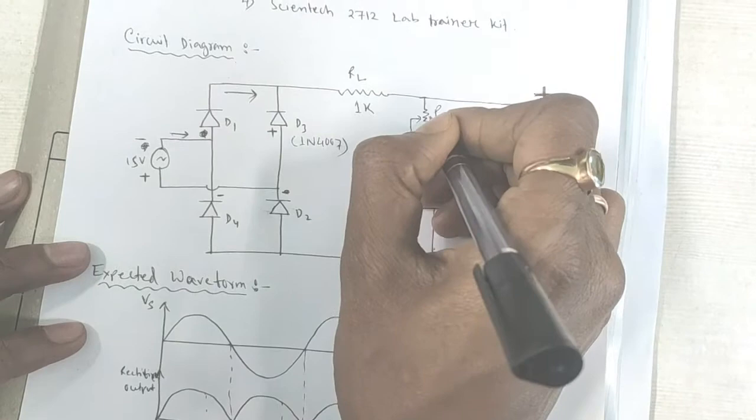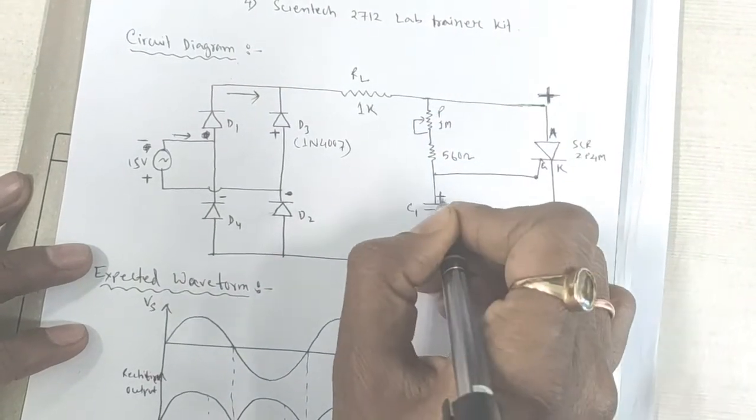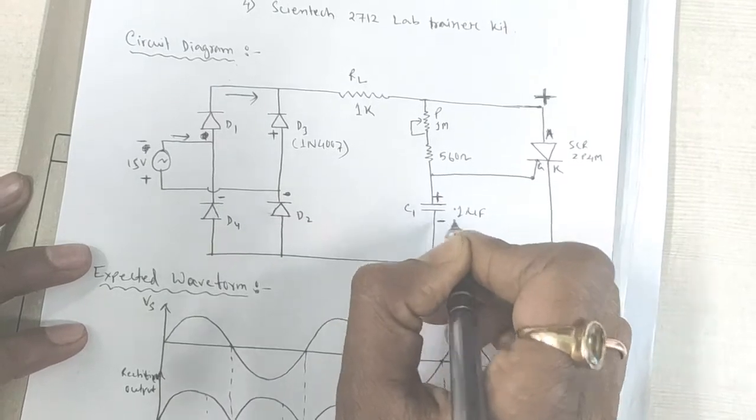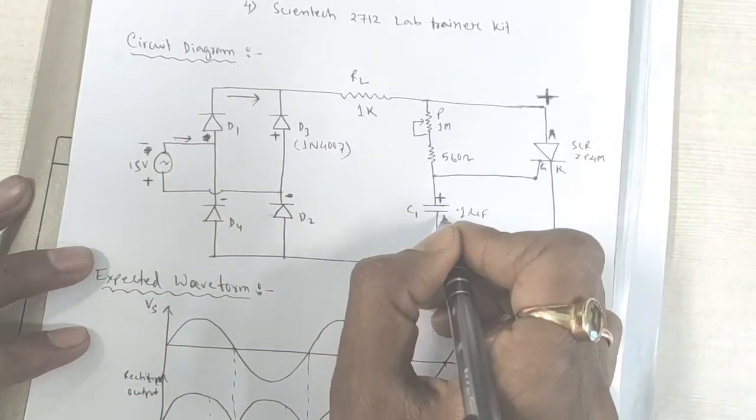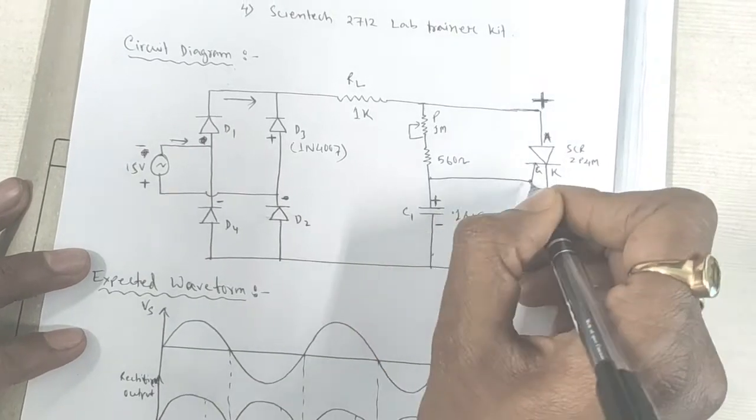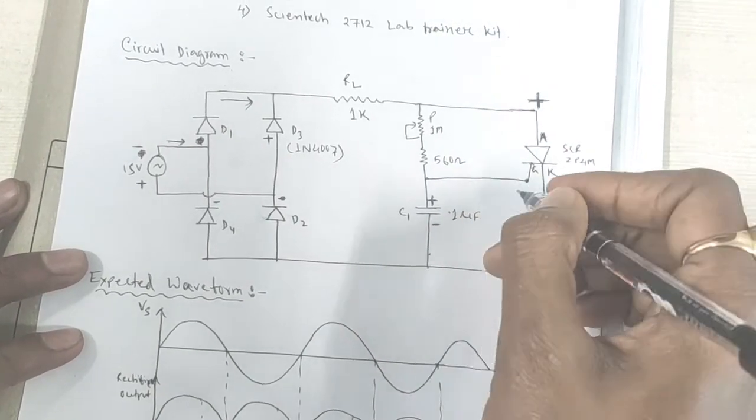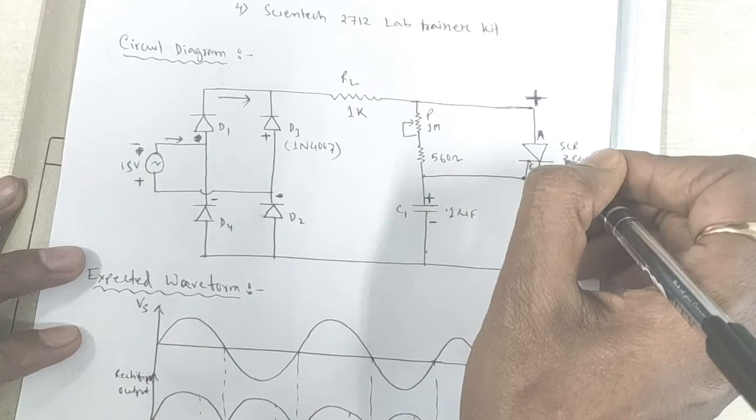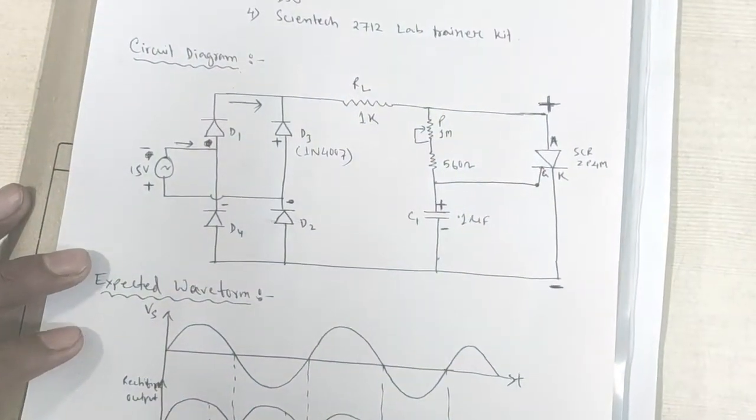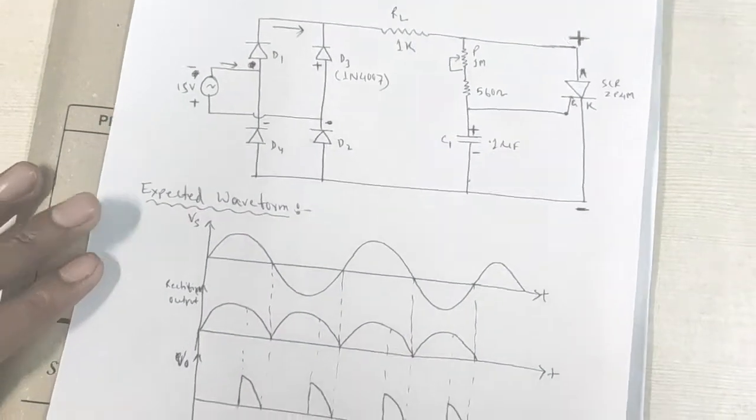The current will pass through this potentiometer and charges the capacitor. Capacitor polarity is positive and negative. Once the capacitor charges and the capacitor voltage will exceed the minimum gate voltage, in that time, the SCR will turn on. This is the whole procedure of RC full wave triggering.